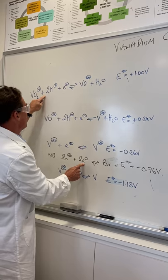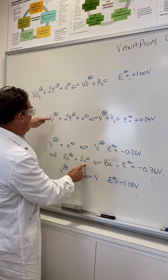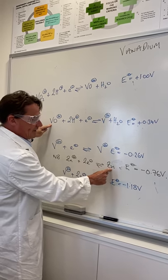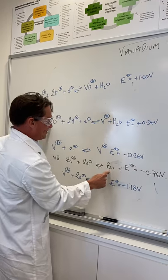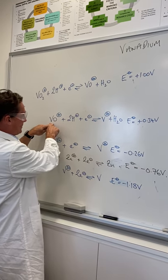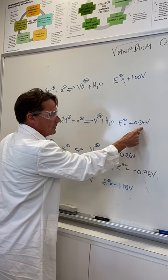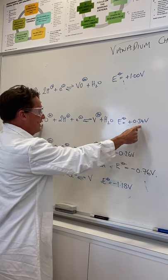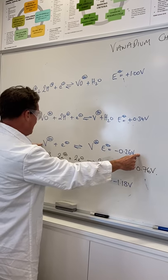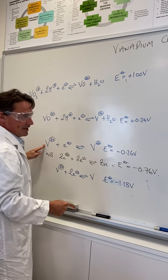This is going to be reduced and go down to first vanadium +4. But notice the zinc still has a much more negative potential than going between +4 to +3, which is +0.34 volts. Not quite as oxidizing, but still fairly, and so the zinc will reduce it down even further to vanadium +3.